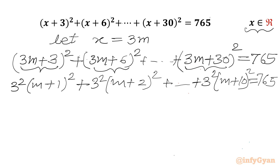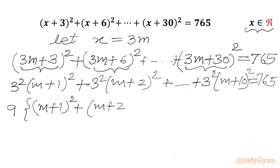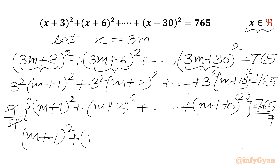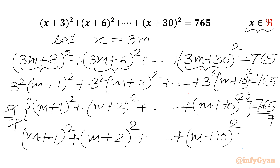Now 3² is common from the LHS, so I will write 9. In the bracket it will be (m + 1)² plus (m + 2)² up to (m + 10)² equal to 765. Now we can divide both sides by 9, so we can write (m + 1)² plus (m + 2)² plus ... plus (m + 10)² equal to 85.